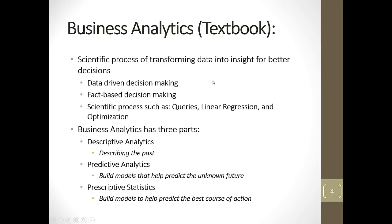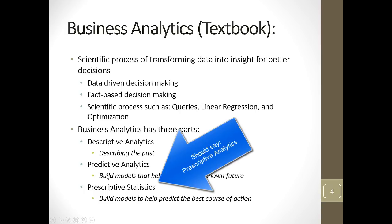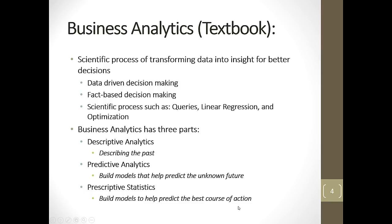There's the definition straight from our textbook. Other ways of describing what we're going to do: data-driven decision making, fact-based decision making. The scientific process means we're going to be using queries, linear regression, and optimization. In Business 216 and 218, we did queries to extract useful data from our raw data set. In Business 210, we did basic linear regression; in this class, we'll learn more about linear regression. Optimization is something specific to this class that we have not done before. Business analytics has three parts: descriptive analytics, which is describing the past; predictive analytics, building models that help us predict the unknown future; and prescriptive analytics, building models that help predict the best course of action.